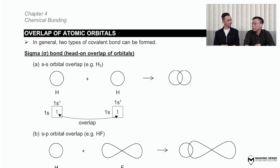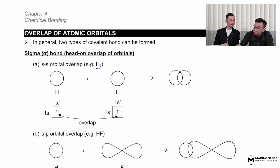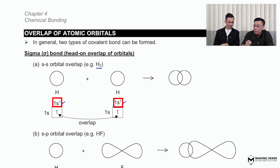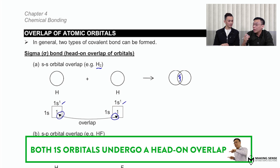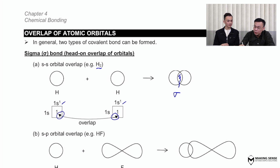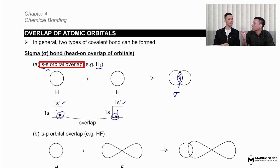In terms of a sigma bond, different types of orbitals can be involved — just like in a head-on car crash, different types of vehicles can be involved. For the H₂ molecule, the electronic configuration of hydrogen is 1s1. The two s orbitals of the hydrogen atoms will overlap with each other, forming a region of overlap — that is a head-on overlap. This sigma bond is formed between an s orbital of one hydrogen and the s orbital of another hydrogen: an s-s orbital overlap.